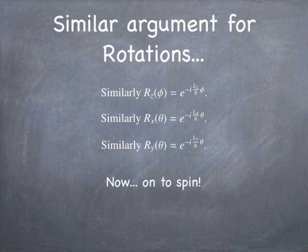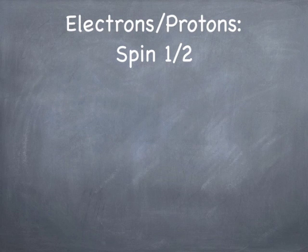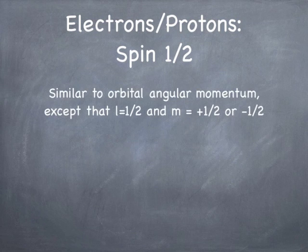And that's all we need — now we can move on to spin. Electrons and protons have a spin of one-half. In principle, other particles have higher values of spin, but let's start with spin one-half since that's the most important for us right now. Spin behaves much like angular momentum, except that instead of l being an integer (0, 1, 2, 3...), l can now take on half-integer values. And m can also take on half-integer values, going from negative l to plus l. So if l equals one-half, there are only two values of m: minus one-half or plus one-half.